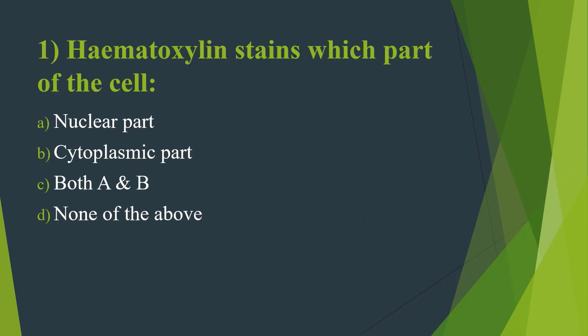First question: Hematoxylin stains which part of the cell? Option A: Nuclear part. Option B: Cytoplasmic part. Option C: Both A and B. Option D: None of the above. Answer is Option A — Nuclear part.